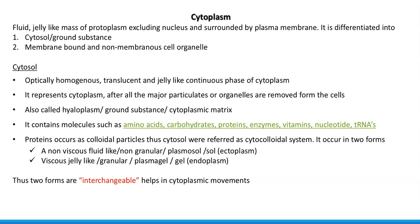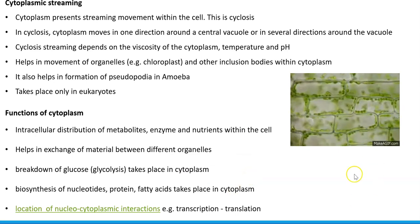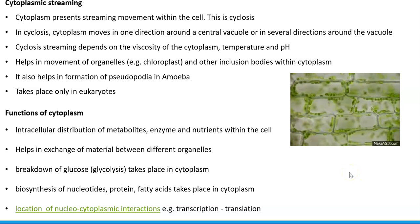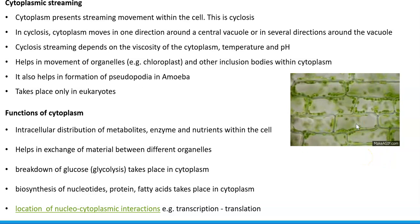Both these forms are interchangeable regularly in the cell depending upon the conditions to which the cell has been exposed. This in turn helps in the cytoplasmic movements of the cell. Next, we look at cytoplasmic streaming — you can see cytoplasmic streaming of the chloroplast cells in plants on the right-hand side.